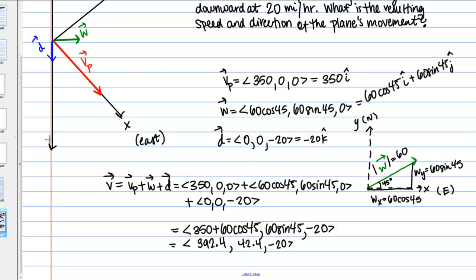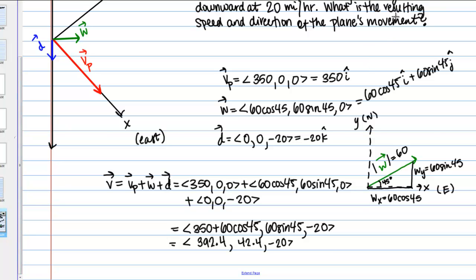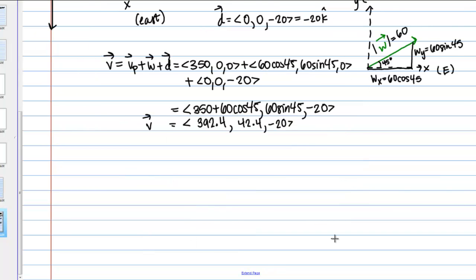So we want to know the resulting speed and direction. So this is our vector, this is vector V. But we kind of want to separate this into its magnitude and its direction. So let's start by finding the magnitude. That's probably the easier thing to think about. So the magnitude here is going to be just simply the square root of the sum of the squares of each of these components. So the square root of 392.4 squared plus 42.4 squared plus negative 20 squared. And if you work that out, you should get approximately 395.2. And the units here are miles per hour.